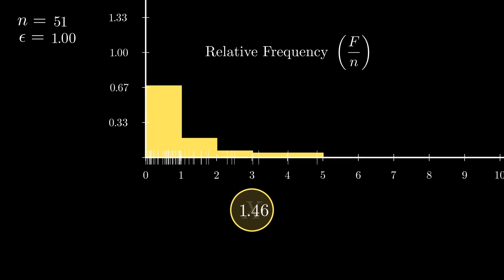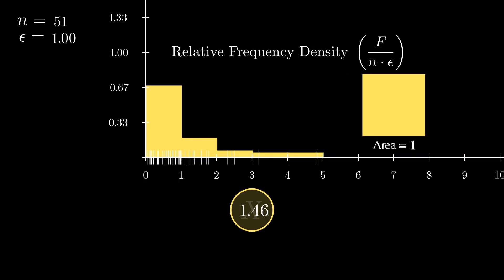A solution to this problem is to scale the rectangles according to epsilon, resulting in the relative frequency density. This time, no matter what n and epsilon we choose, by construction, the total area of the graph will always be equal to 1, resulting in a more stable description of the behavior of the random variable.